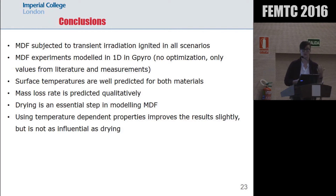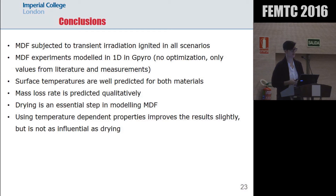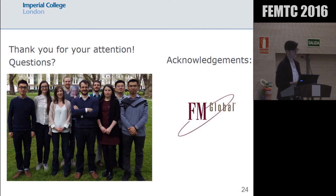So now on to my conclusions. What we did was subject MDF samples to transient irradiation to see whether or not we can obtain good results. We used a 1D model, and the surface temperatures were well predicted in both cases. The mass loss rate is also well predicted, but there's a bit of an under-prediction. The drying step is essential for modeling MDF. When possible, it's good to use temperature-dependent properties, but when not, it's not a big problem. We are going to look next into the burning of MDF, because we want to see whether the behavior is different than when applying constant irradiation, so we can make better comparisons. Thank you — if you've got any questions.